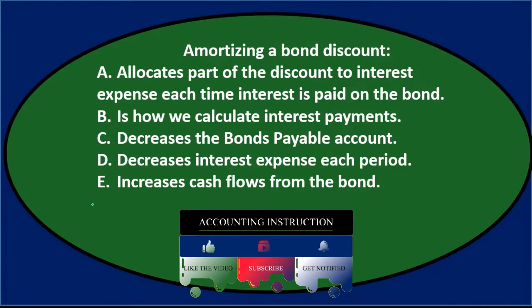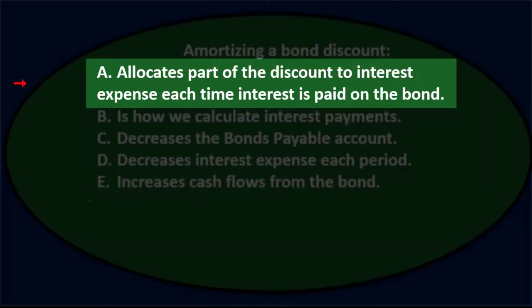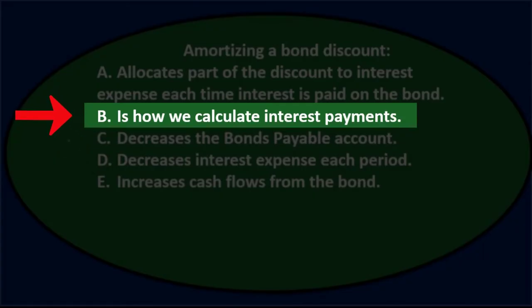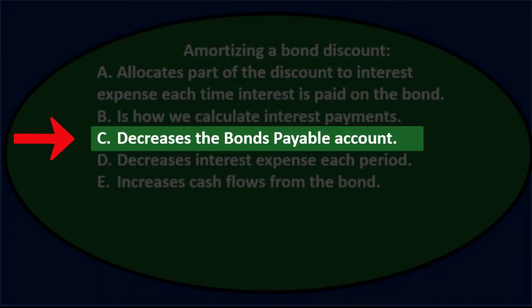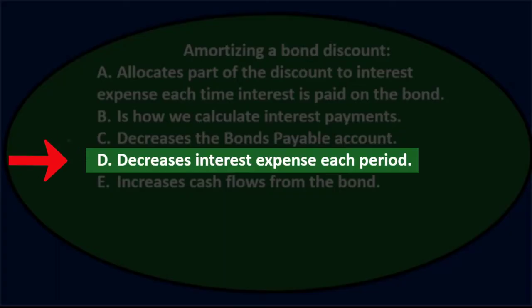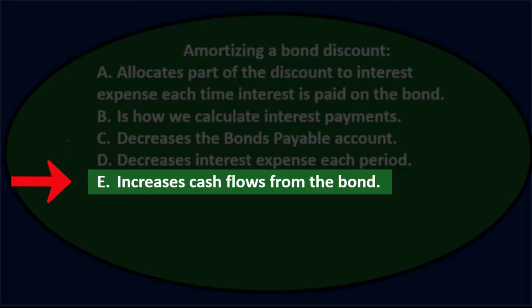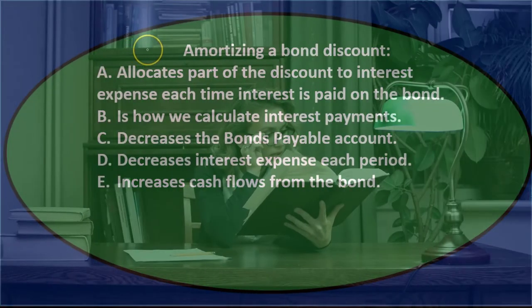Next question: amortizing a bond discount — A) allocates part of the discount to interest expense each time interest is paid on the bond, B) is how we calculate interest payments, C) decreases the bond payable account, D) decreases interest expense each period, or E) increases cash flow from the bond.